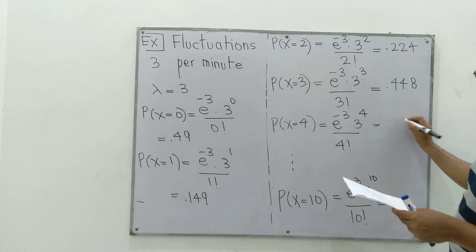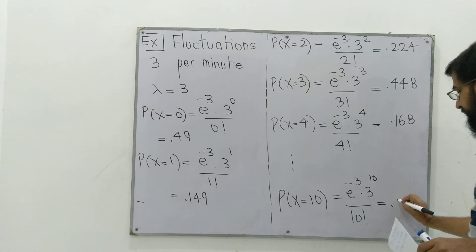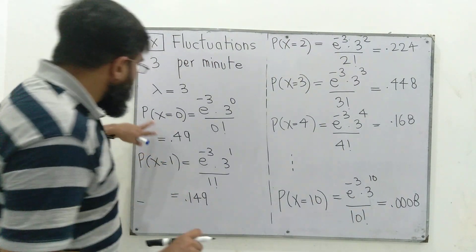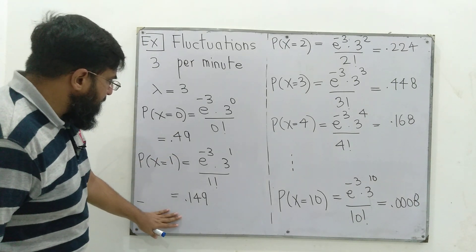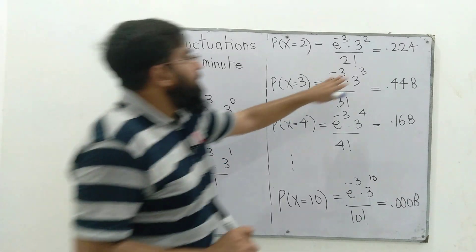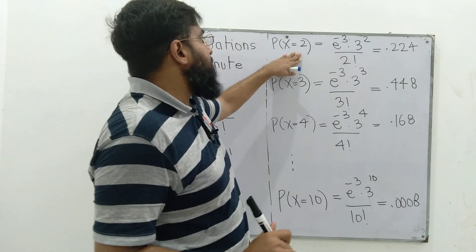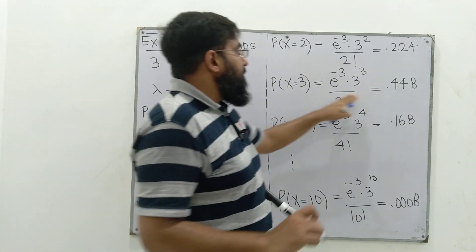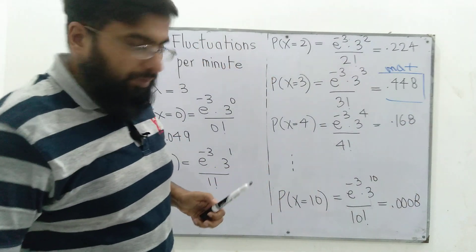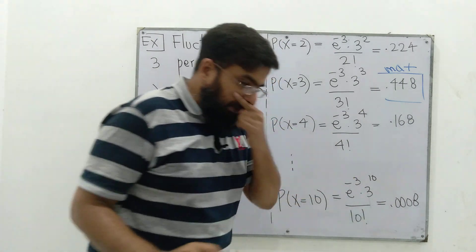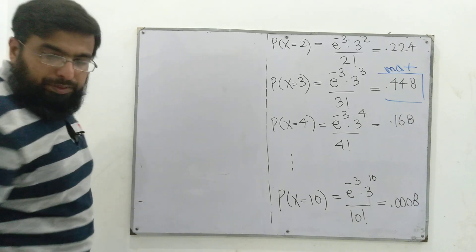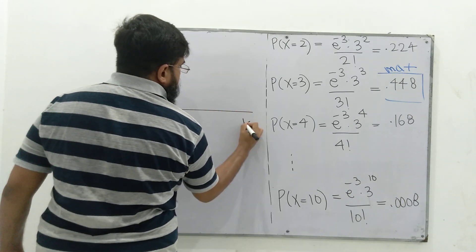It can be seen that when x is zero the probability is 0.049 — a small value. As x increases, the probability rises. The maximum value is 0.448 at x equal to three. Then if x equals four it decreases, and for x equal to ten it is the least. We can plot the probability of x versus different values of k.